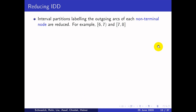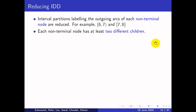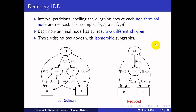An IDD can be reduced if the interval partitions labeling the outgoing arcs of each non-terminal node are merged. For example, the intervals [6,7) and [7,8) can be reduced to one interval [6,8). Additionally, each non-terminal node must have at least two different children, and no two nodes may have isomorphic sub-graphs. We can reduce the previous IDD tree by merging these two sub-intervals into [6,8) and merging both X1 and X2 nodes with their outgoing arcs.